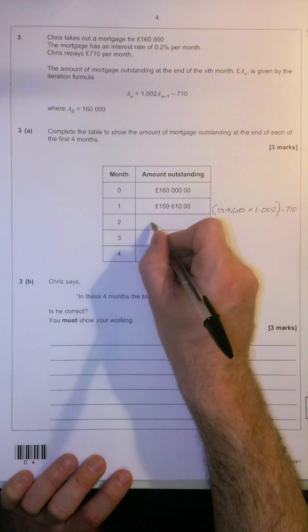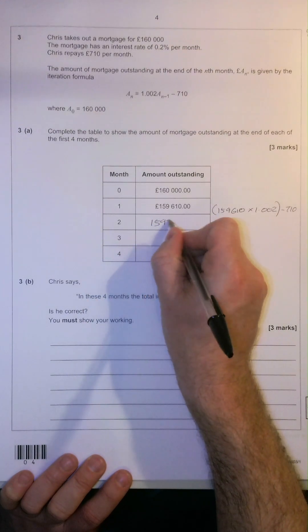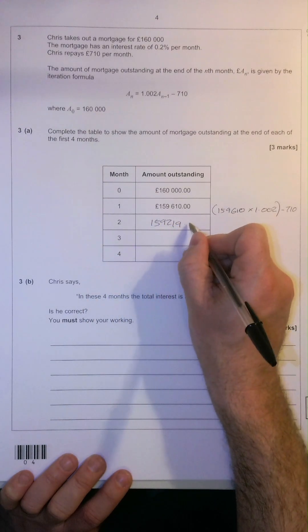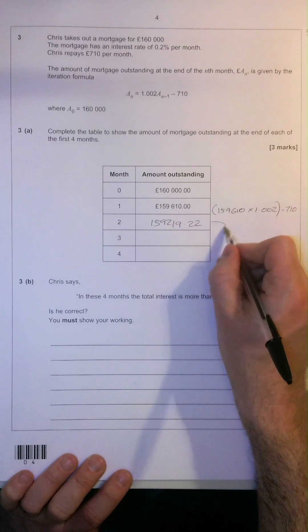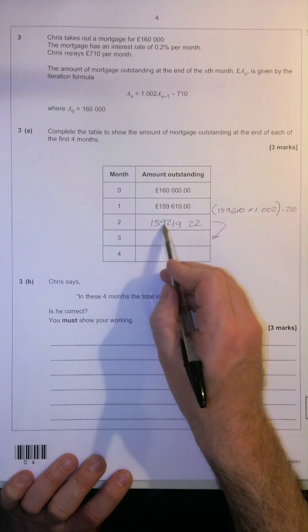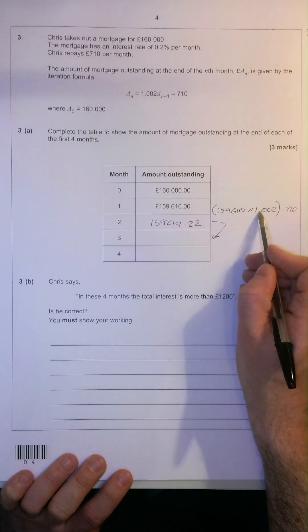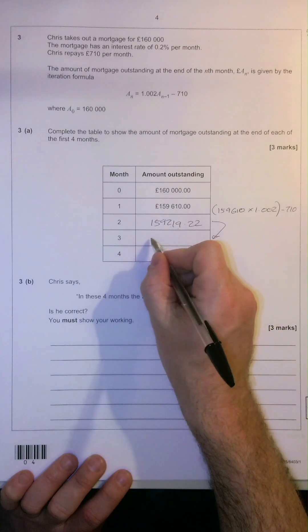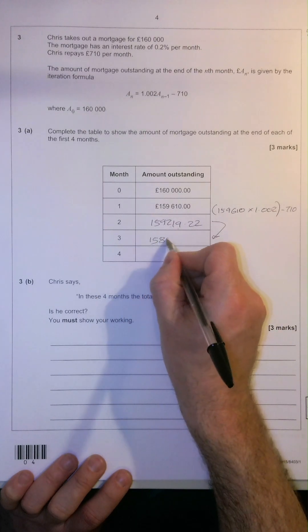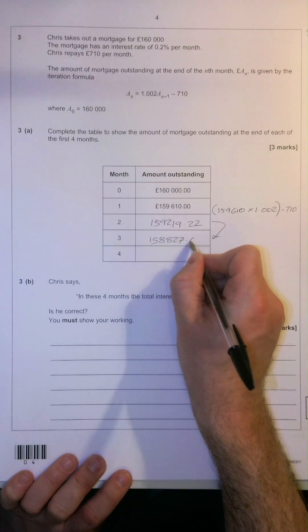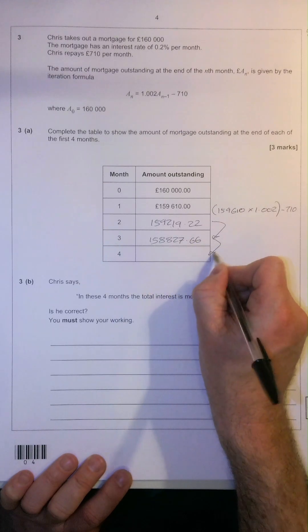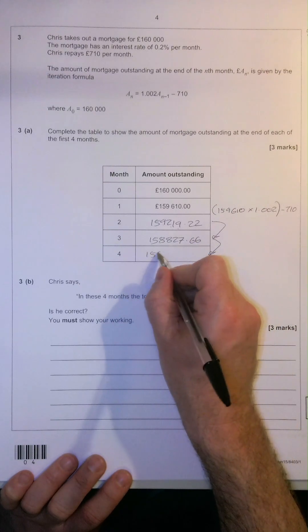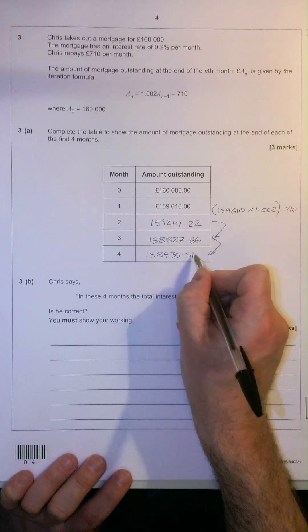Put that into a calculator, we're going to get $159,219.22. If we do the same again, $159,219.22 times 1.002, and then, of course, take off the repayment, we're going to get $158,827.66, and the same again will give us $158,435.31.